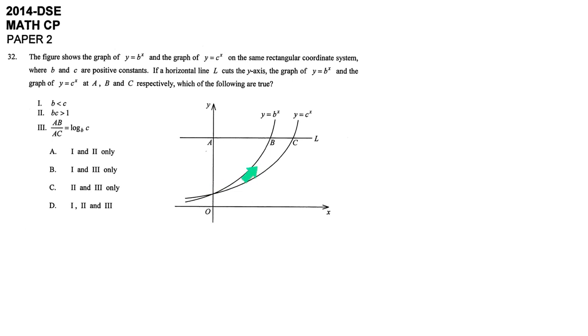In reverse, if we multiply some value which is between 0 and 1, then the value, the magnitude, will become smaller and smaller and approach to 0. So now at least we know that b is larger than 1 and c is larger than 1.